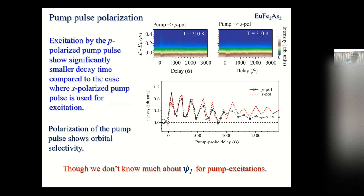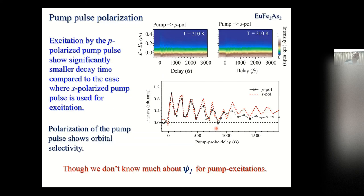Looking at the results for EuFe₂As₂: we used polarized pump pulses for the experiment and observed how the signal decays. We do see that they are actually different. S-polarization (dashed line) seems to be longer-lived compared to P-polarization. Even without knowing all the details, we can see that we can get information about the symmetry of the electrons in this material. If you use P-polarized light, the decay curves look different, and if you use S-polarized light, they appear almost flat — not decaying much. Plotting the decay time, the relaxation time for P-polarized light is much smaller — about 100 femtoseconds — whereas S-polarized light gives about 2 picoseconds or so: a factor of about 20 difference. This is very, very unusual.